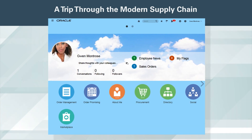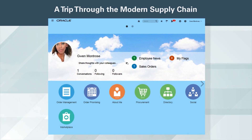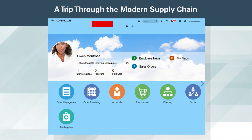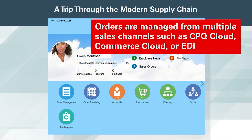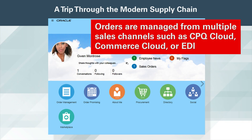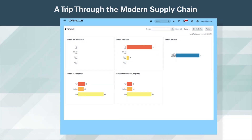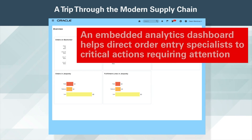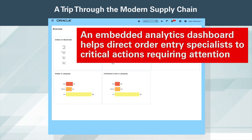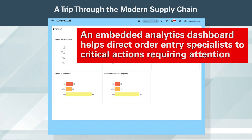Complete order to cash can be achieved with Order Management Cloud, a full-featured multi-channel order management system. Orders are managed from multiple sales channels, such as CPQ Cloud, Commerce Cloud, or EDI. An embedded analytics dashboard helps direct order entry specialists to critical actions requiring attention.